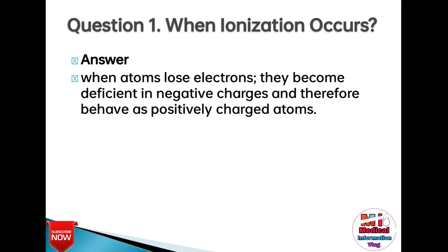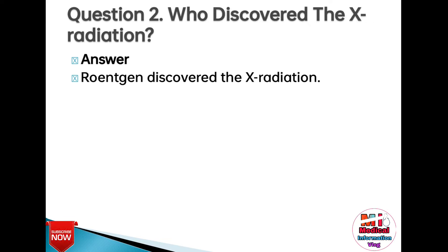Question 1: When does ionization occur? Answer: When atoms lose electrons, they become deficient in negative charges and therefore behave as positively charged atoms.